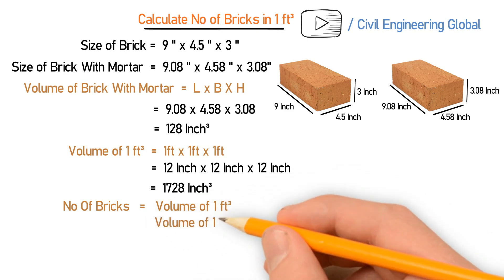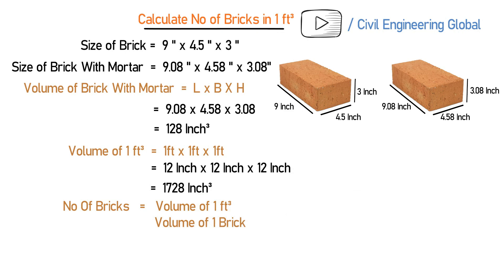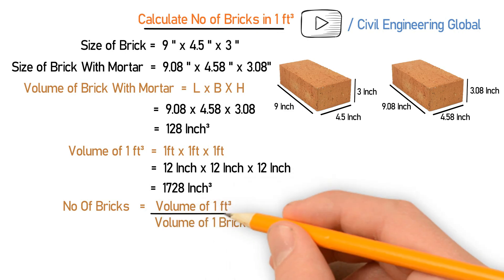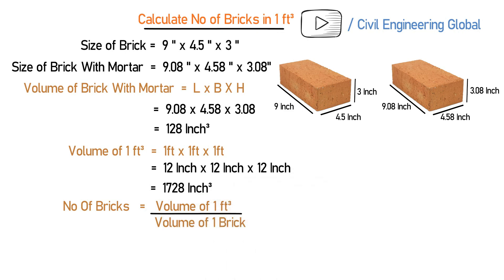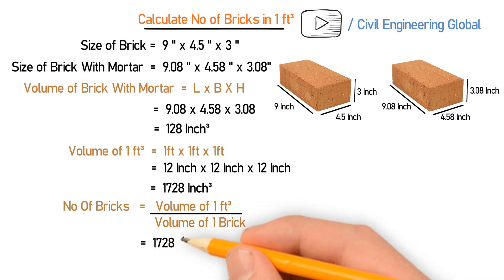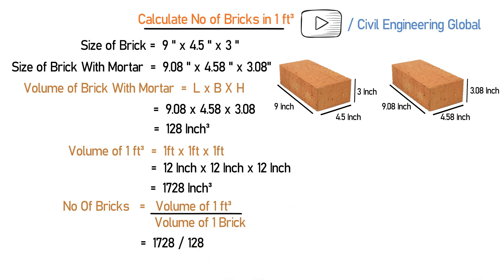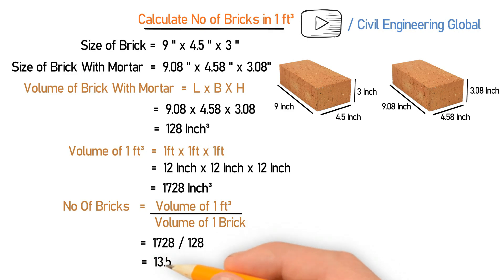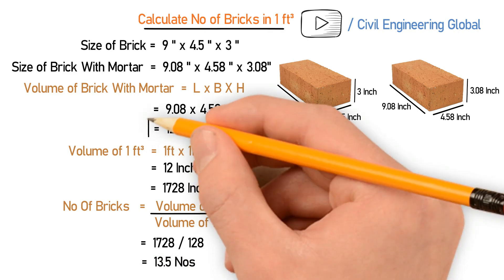Now let's calculate the number of bricks. For this we have the formula: number of bricks = volume of 1 cubic feet divided by volume of 1 brick. The volume of 1 cubic feet is 1728 divided by 128, which gives you 13.5. So you will need 13.5 bricks per cubic foot.